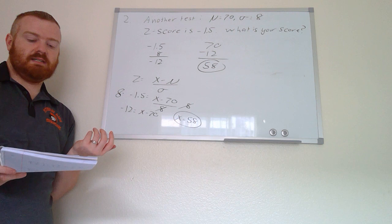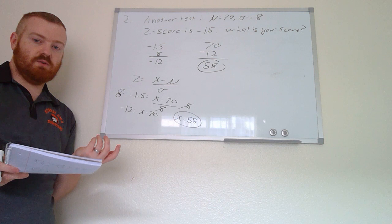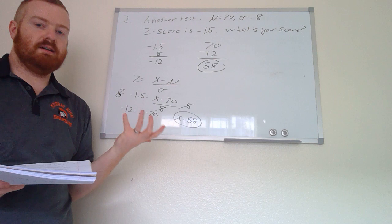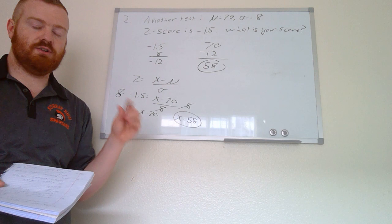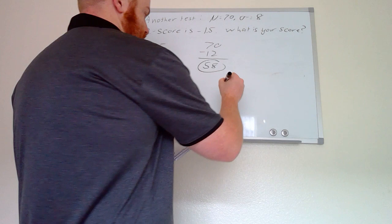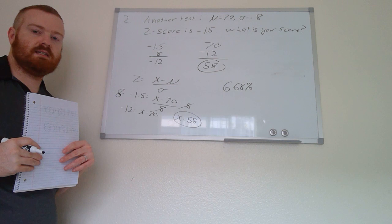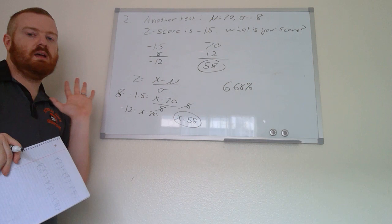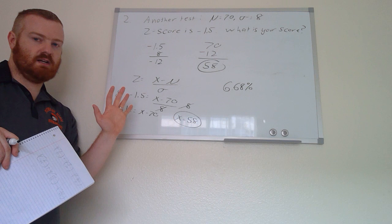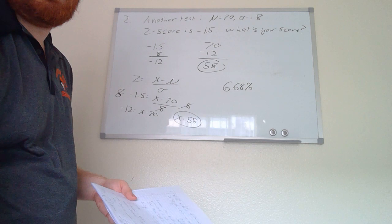If the question also asks for the percentile, we look at the z-score table for −1.5. Since the table uses hundredths, we'd use −1.50 — the first column — which gives a percentile of 6.68%. So 6.68% of people got a 58 or below, and the remaining 93.32% scored above you.